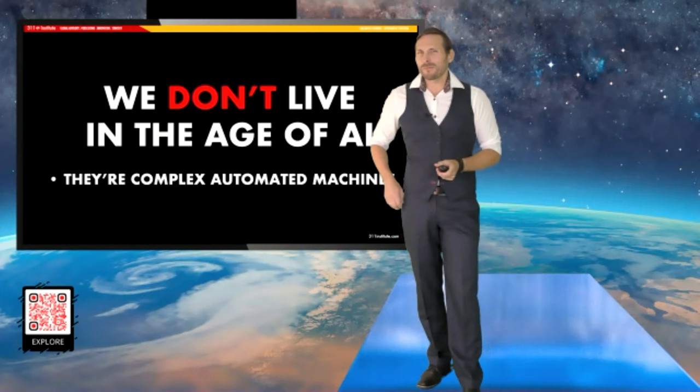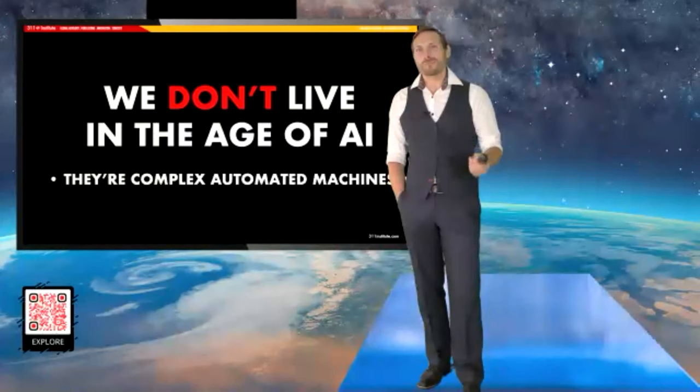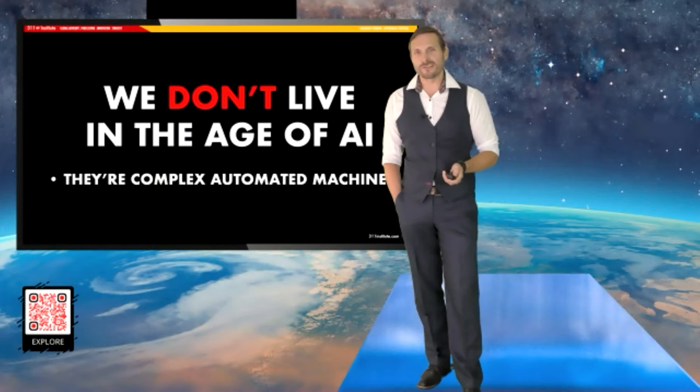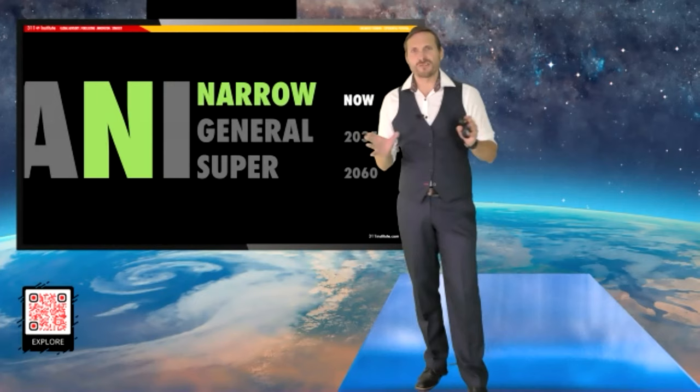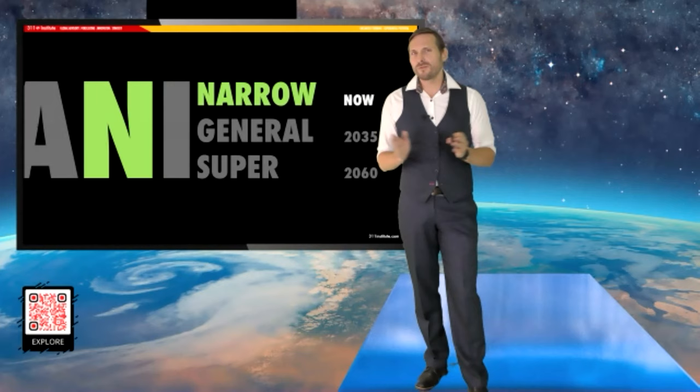So we're getting there, but we're still a little way off from really seeing intelligent machines come to the fore, particularly when we start talking about machines that can rival human intelligence. There are three, predominantly three at a very high level types of artificial intelligence.